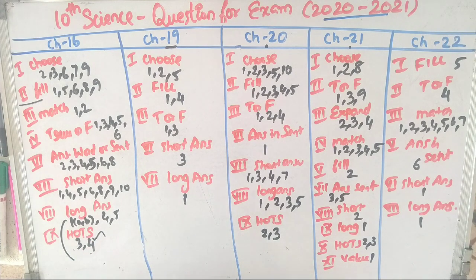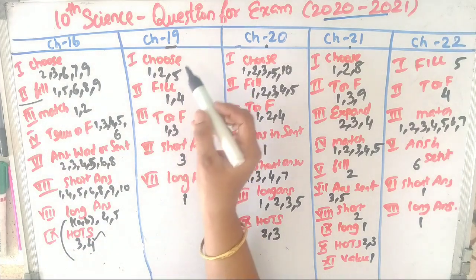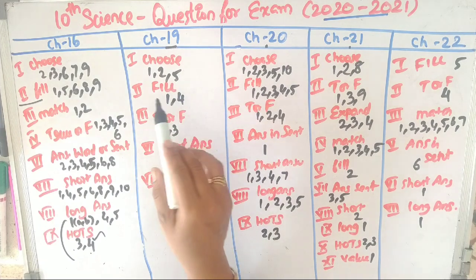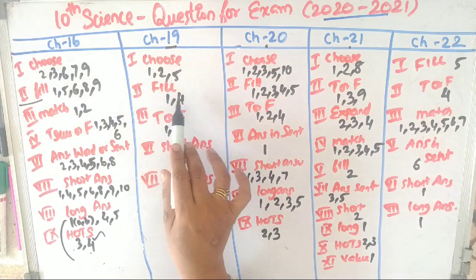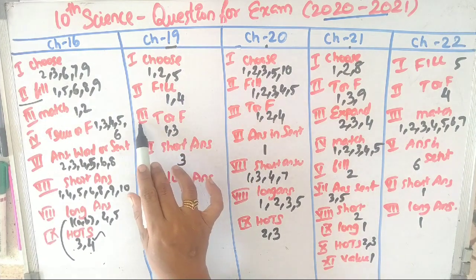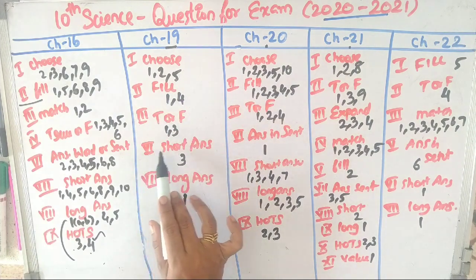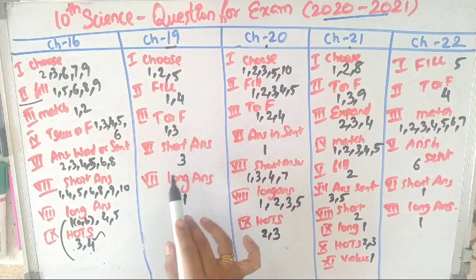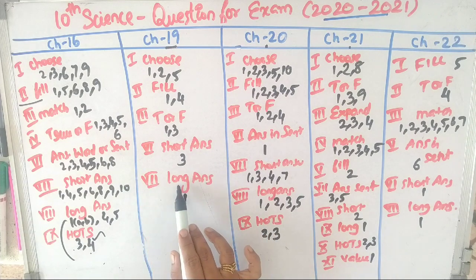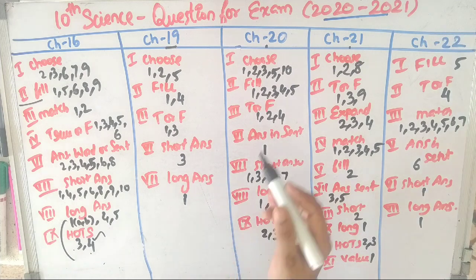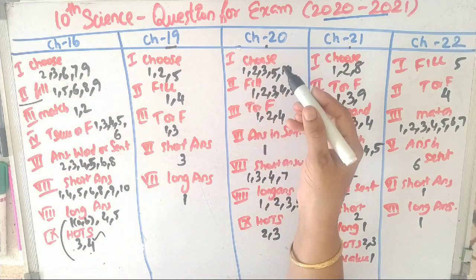Let's take a look at chapters 17, 18, and 19. First, choose: 1, 2, 5. Second, fill in the blanks is 1, 4. Third, true or false is 1, 3. Fourth, short answer is 3. Seventh, long answer is 1. This is chapter 19.